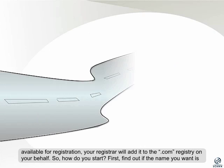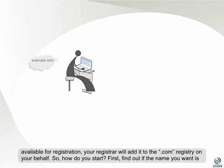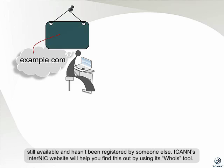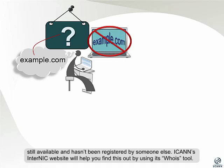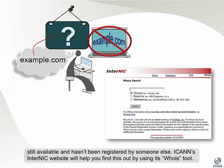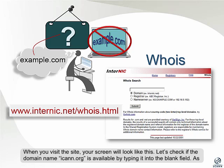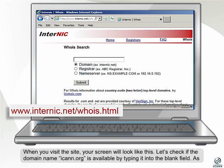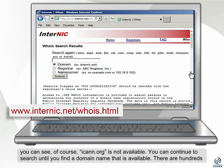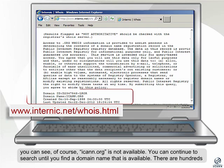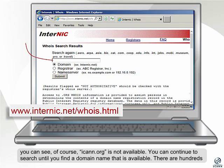So, how do you start? First, find out if the name you want is still available and hasn't been registered by someone else. ICANN's Internet website will help you find this out by using its Whois tool. When you visit the site, your screen will look like this. Let's check if the domain name ICANN.org is available by typing it into the blank field. As you can see, of course ICANN.org is not available. You can continue to search until you find a domain name that is available.